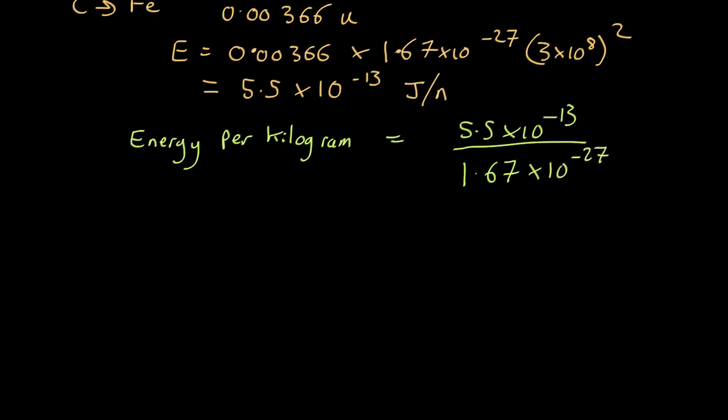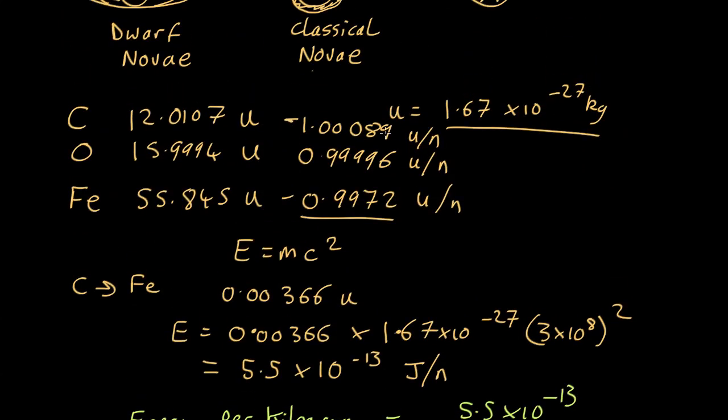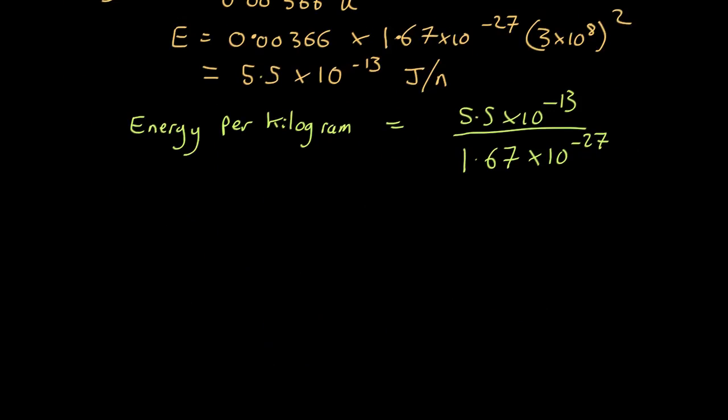You can worry about whether it's this times the third mass of a nucleon or that, but that's going to make very little difference here, which comes out as about 3.3 by 10 to the 14 joules per kilogram. Which is a lot.